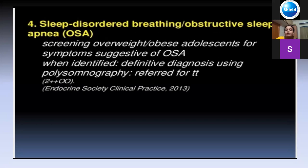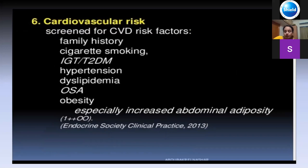The most worrying concern is the risk of type 2 diabetes. When the child walks in, get an HbA1c done, and even if normal, rescreen once every 3-5 years and more frequently if she has central adiposity or substantial recent weight gain. Cardiovascular risk should be assessed by family history of smoking, hypertension, dyslipidemia, and obesity.